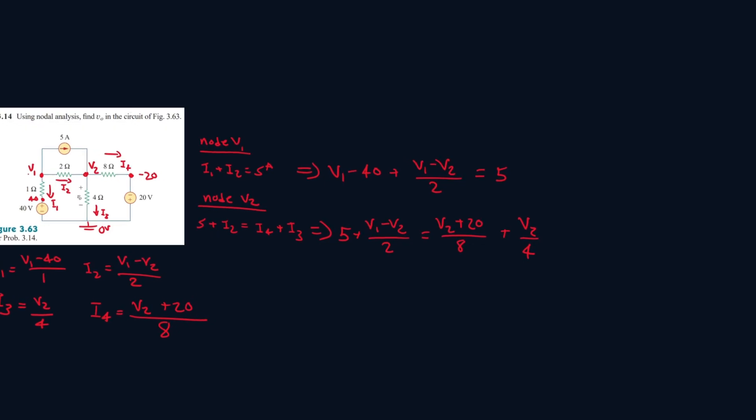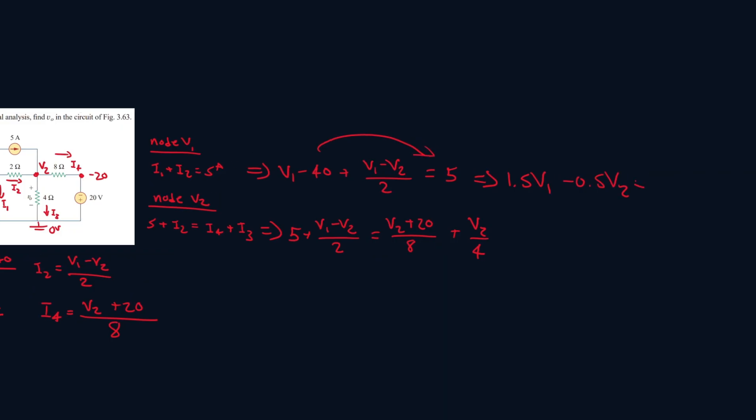Alright, now let's simplify these more, and start plugging them into each other. So let's collect like terms, V1 plus V1 over 2, that's 0.5 V1, so it'll be 1.5 V1. Then we have minus V2 over 2, that's just minus 0.5 V2. Now let's bring the 40 to the other side, so minus 40 turns into positive 40, plus 5, that's 45.